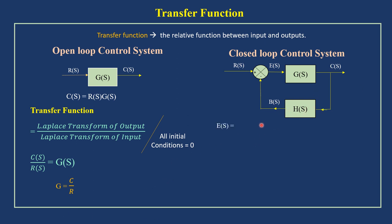Defining E of S — the error output is the difference of R of S and B of S. B of S is the input to the comparator, and R of S is the other input. Since R of S is positive and B of S is negative, E of S equals R of S minus B of S. Now defining B of S: it is the output signal flow of the feedback system. Output signal flow is the product of input signal and system gain, and the feedback system gain is H of S. The input signal flow to the feedback system is C of S, so B of S equals C of S into H of S.